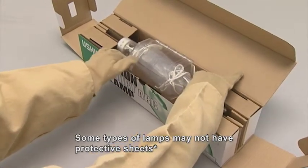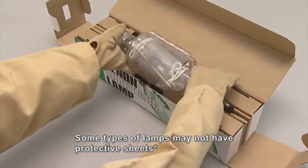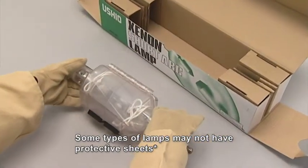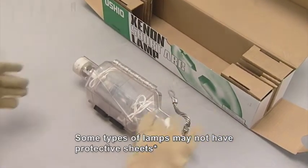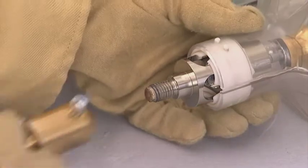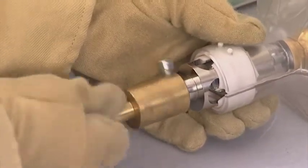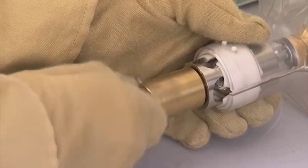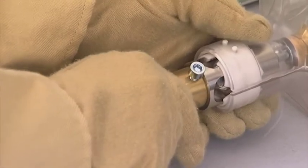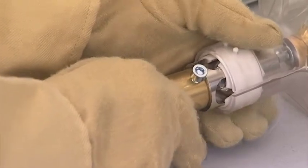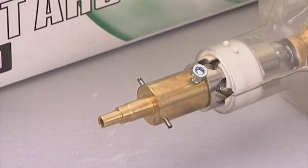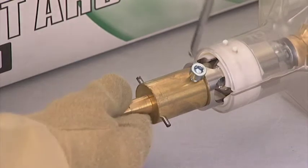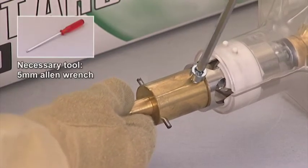Remove the new lamp from its box. Install the lamp cathode adapter into the lamp. Make sure that there is full contact between the cathode adapter and the lamp base. Do not take the lamp out of its protective cover while mounting the adapter. Tighten the screw to 2.5 Nm.